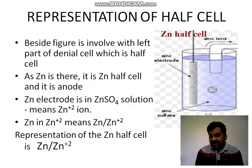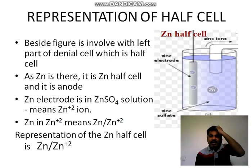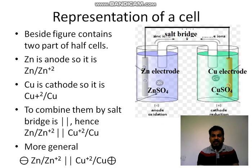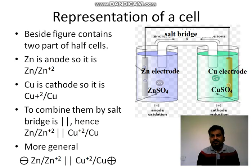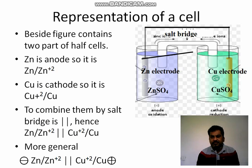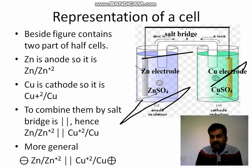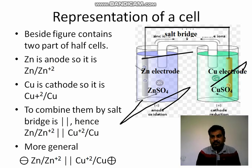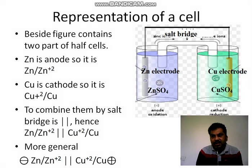Representation of half cell. What is a half cell? A half cell is nothing but one part of the electrochemical cell. If we see the electrochemical cell, it has two portions. There are two portions in the electrochemical cell — one is known as anode and another one is known as cathode.